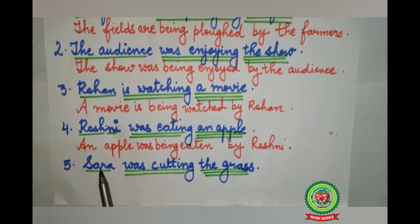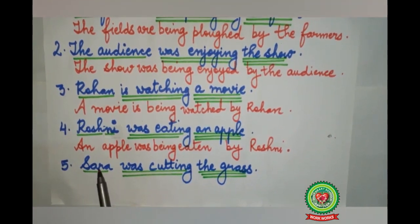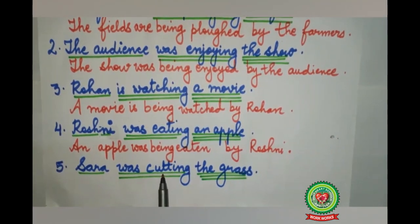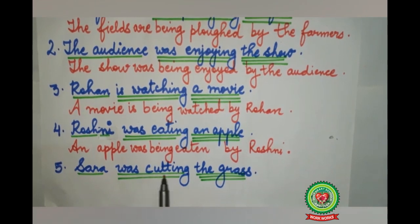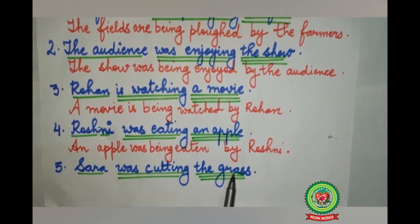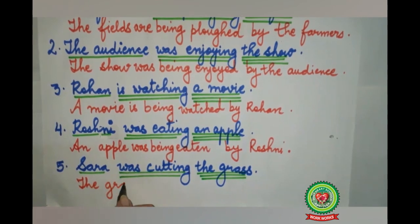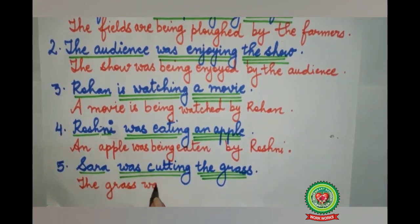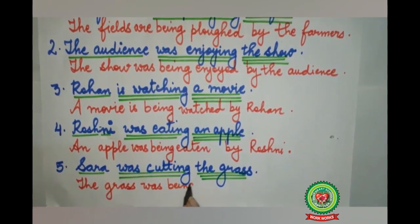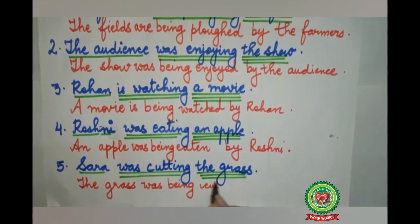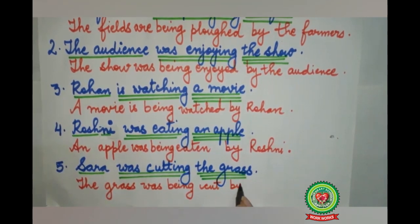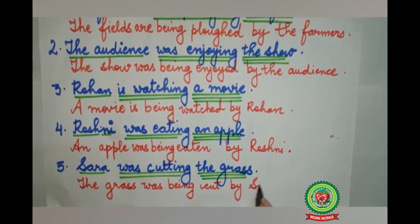The last sentence: 'Sarah was cutting the grass.' Who? Sarah — subject, single underline. 'Was cutting' — action word, double underline. What? The grass — triple underline. The sentence becomes: 'The grass was being cut by Sarah.' Full stop.